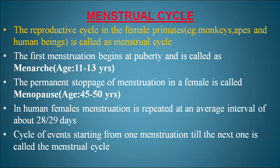The first menstruation begins at puberty and is called menarche, which is seen at the age of 11 to 13 years. The permanent stoppage or cessation of menstruation in a female is called menopause, which is seen at the age of 45 to 50 years.